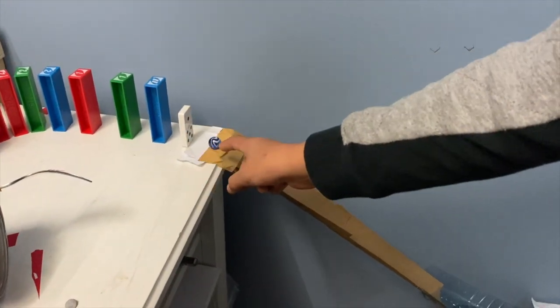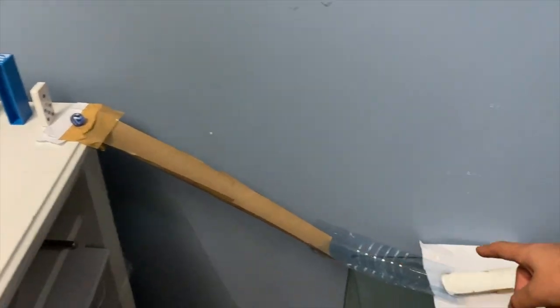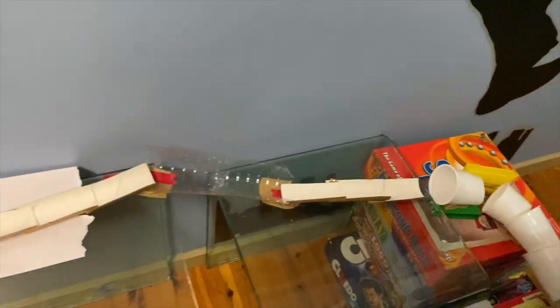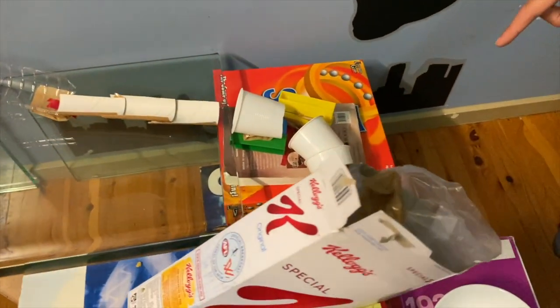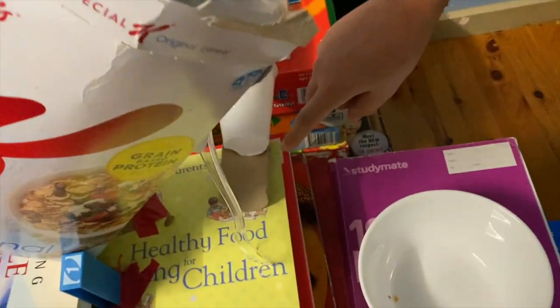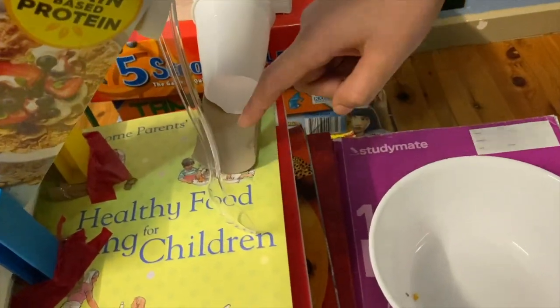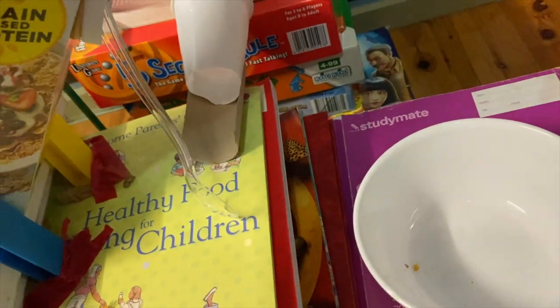And then the last domino, the marble will roll down this ramp, go through these cups, through this sort of ramp, and then hit this, making it fall over, and then the cereal will go into the bowl.